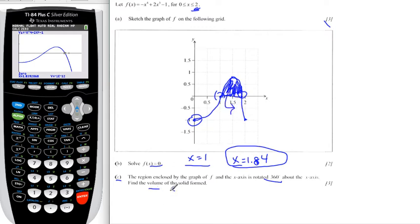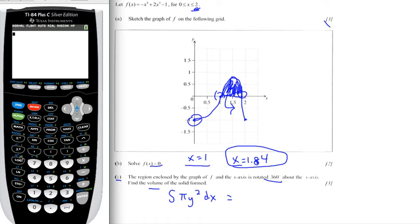So straight out of the formula booklet, you know that the volume is pi y squared dx. And once you have this, that's your method, you can let your calculator do the work. So you go to the math menu. We want number 9, the integral.